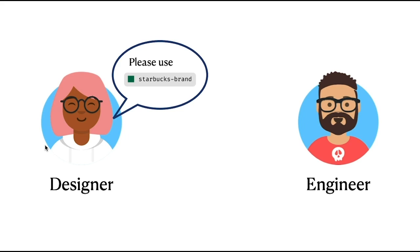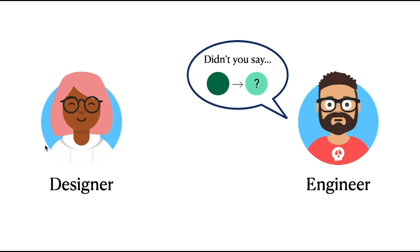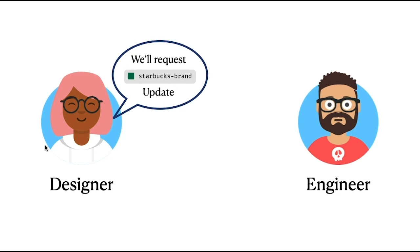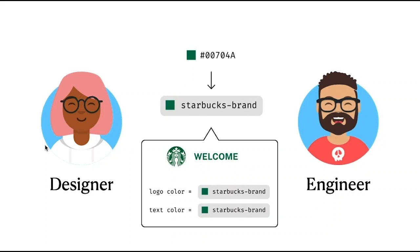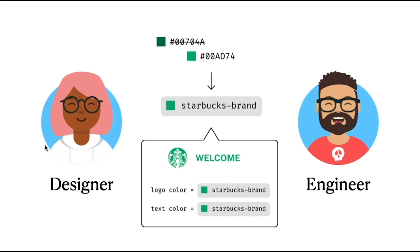So the designer says: we have a token now, so let's use the Starbucks brand token. Please use this for the Starbucks green. The engineer is a little worried because he heard that next week maybe the brand color will update. The designer says: if the brand color does update, we will request an update to the token itself, so don't worry. Engineers can now use the token and not worry about when the color updates — because when the color does update from this dark green to the brighter green, the Starbucks brand token will be updated and that will be reflected everywhere it's being used.